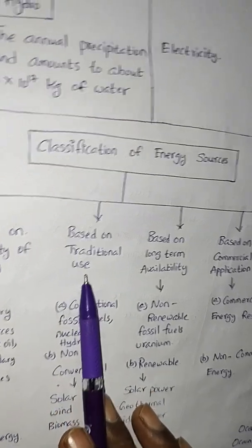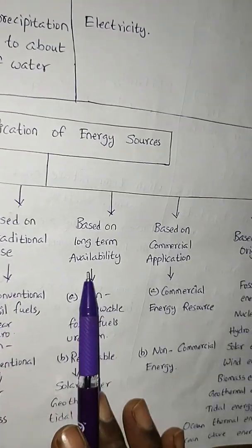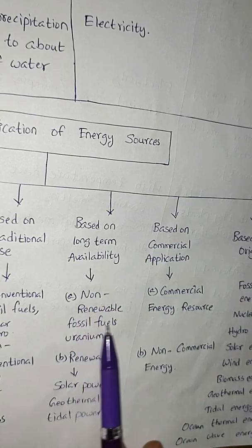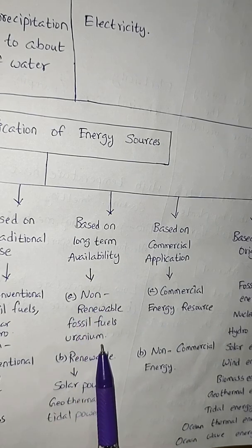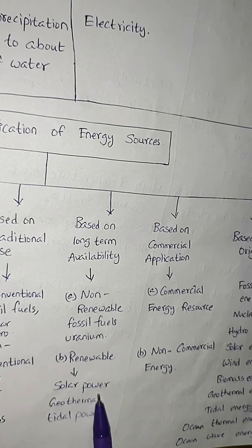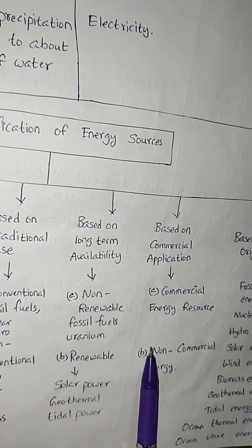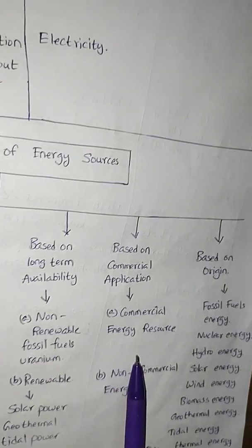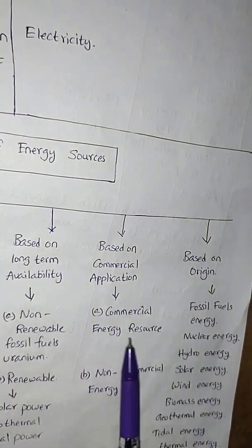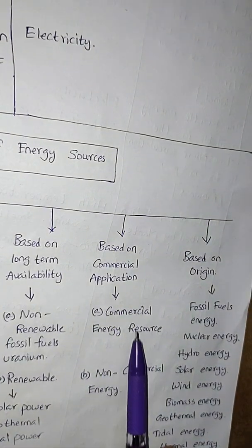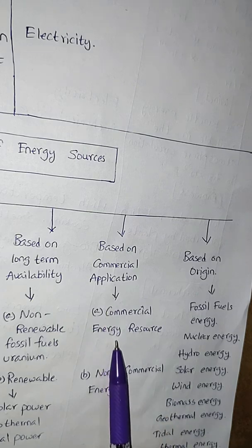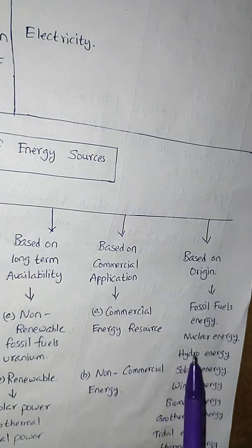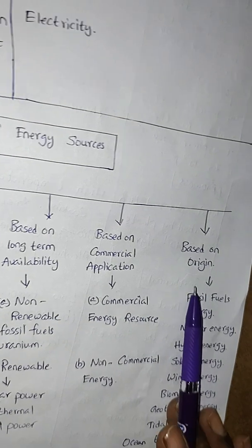Based on long-term availability: non-renewable sources include fossil fuels and uranium, while renewable sources include solar power, geothermal, and tidal energy. Based on commercial application, there is commercial energy and non-commercial energy.